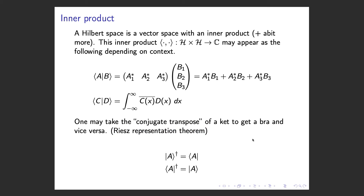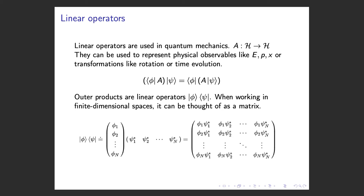There are also linear operators used in quantum mechanics, which take in a state vector and output a state vector. These can be used to represent physical observables or transformations on your state vector. You can also define linear operators acting on the bra. You might also have seen outer products, which are also linear operators. When working in finite dimensional vector spaces, the outer product can be thought of as a matrix — on the left you have a ket as a column vector, and on the right you have a bra as a row vector, and by matrix multiplication you get a matrix.